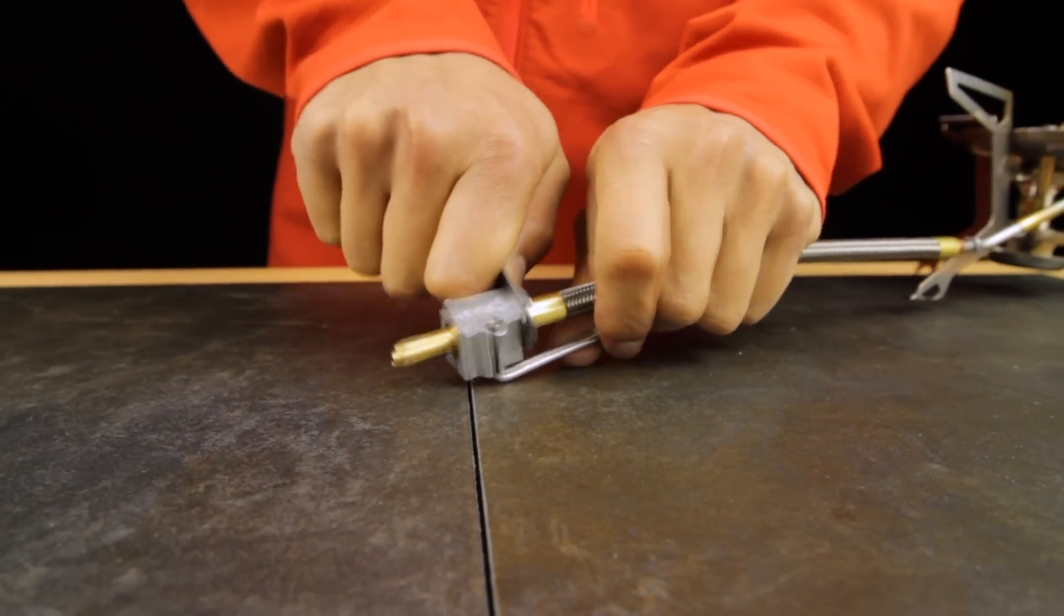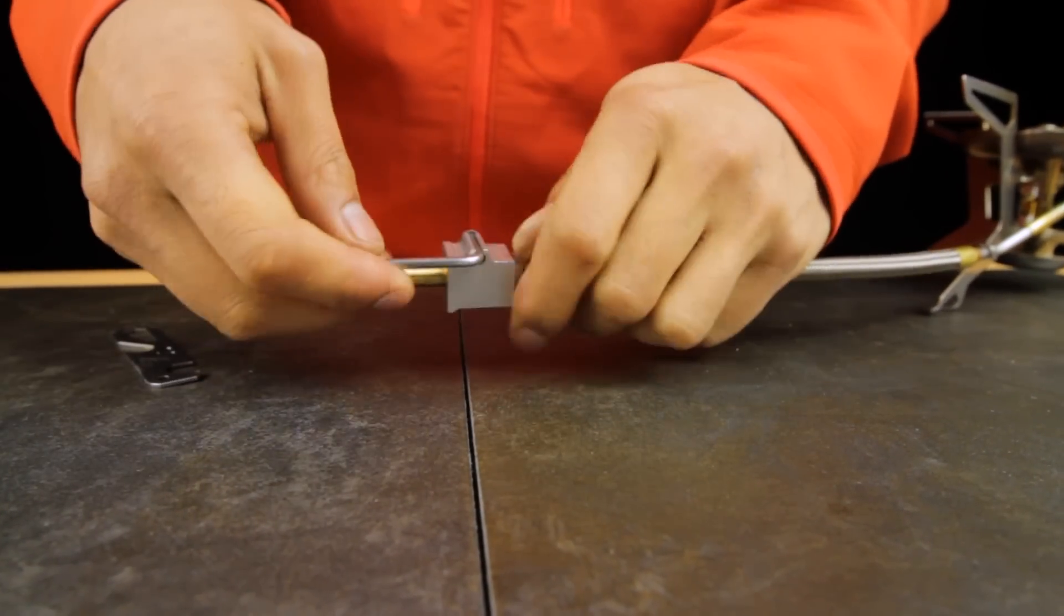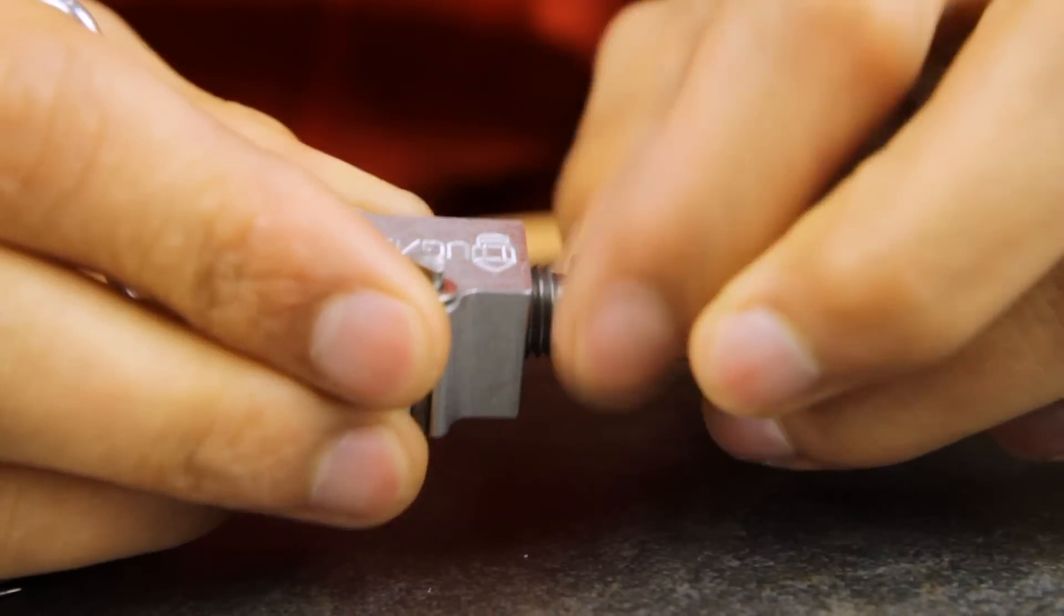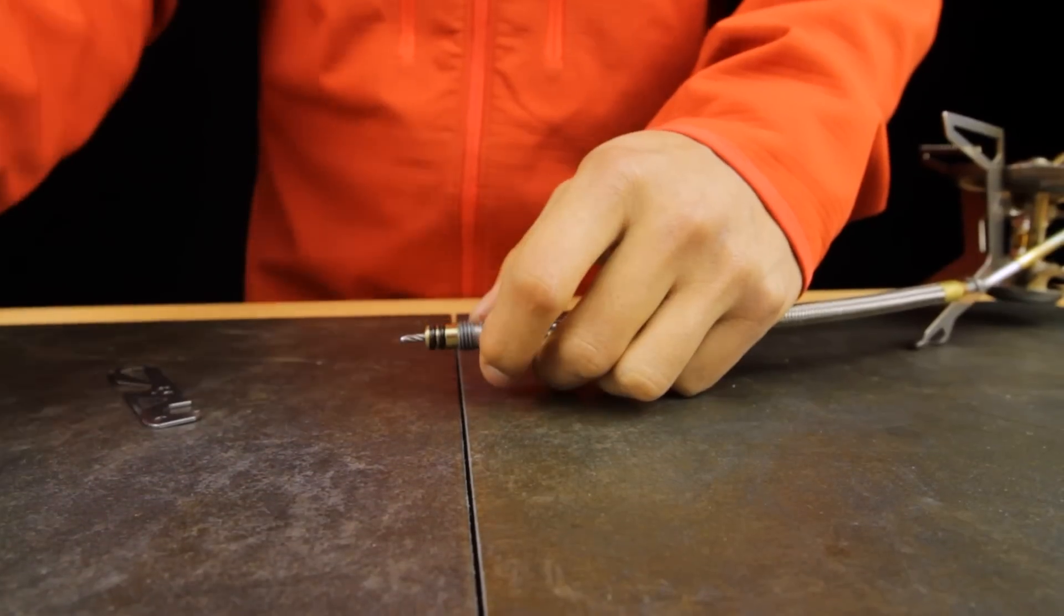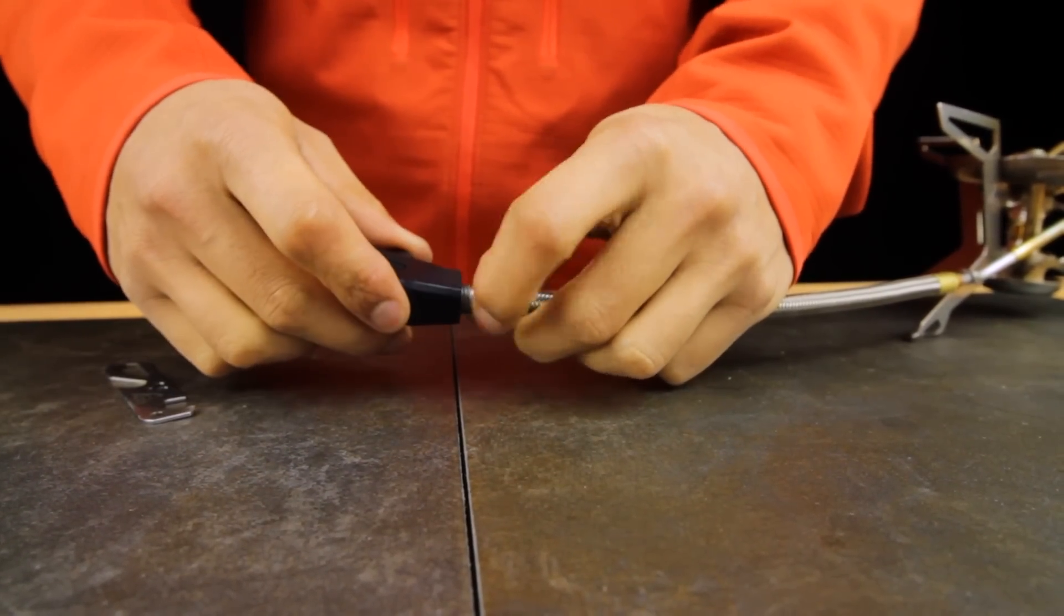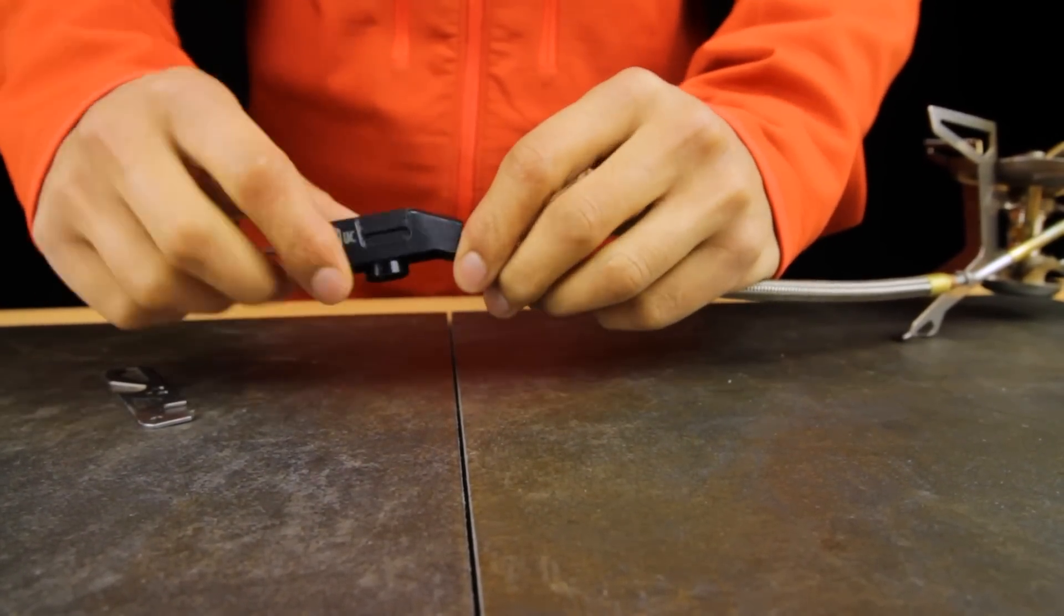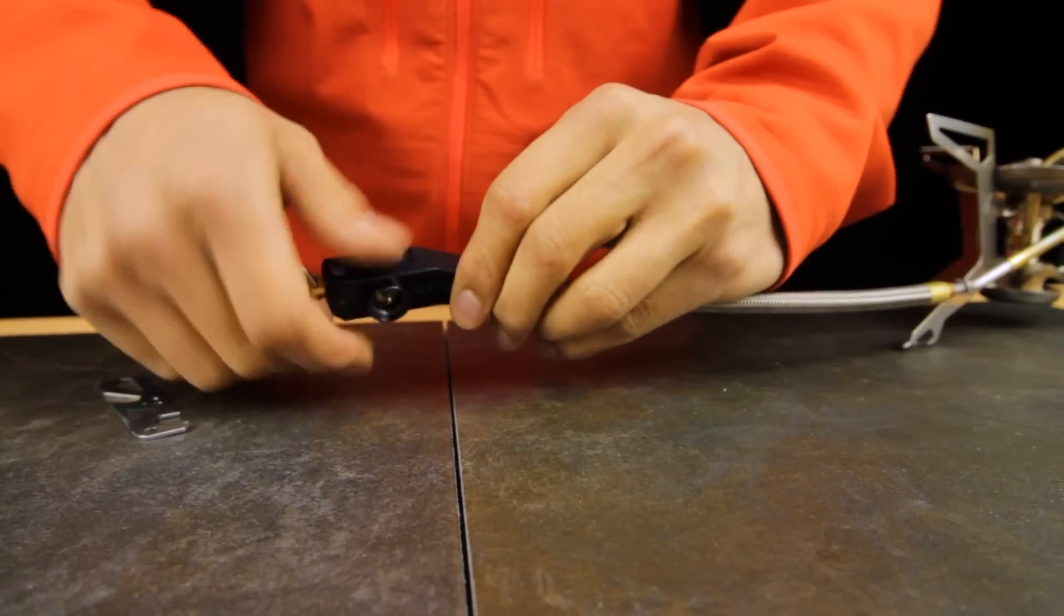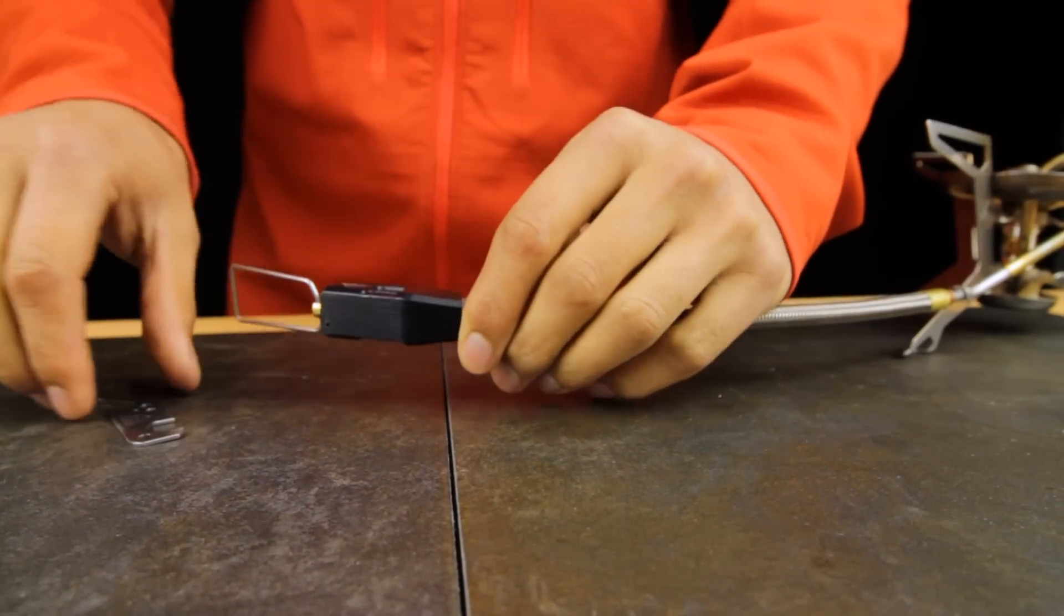To change the fuel adapter, loosen the retainer nut on the fuel adapter using the jet and cable tool, and disconnect the fuel adapter from the fuel line. Insert the end of the fuel line into the new fuel adapter. Snugly tighten the retainer nut using the jet and cable tool.